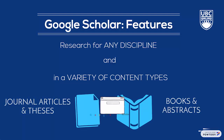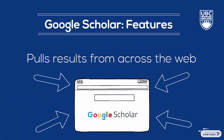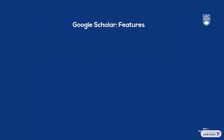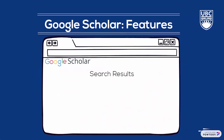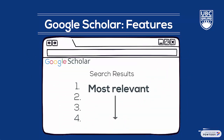Google Scholar offers an even broader search than UBC Library, as it pulls results from the entire web. This can be useful at the beginning stages of research when you want to see what kind of information exists on your topic, or when you're working on a multidisciplinary topic. Google Scholar aims to sort and order results to show you the most relevant results first, taking into account the publishing location, date, and the number of times and how recently the work was cited.